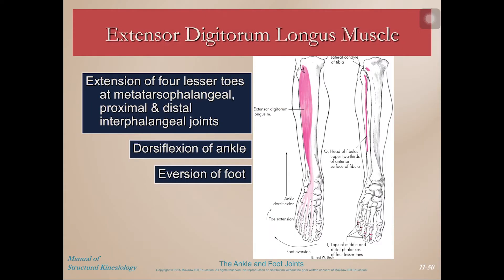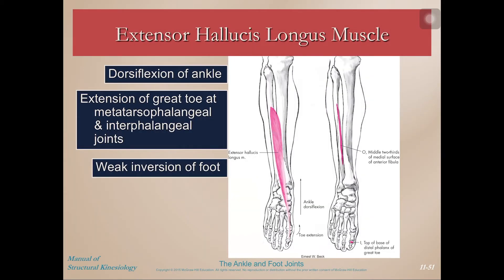Next is the extensor digitorum longus — you can tell by its name that it extends the digits. It not only does extension of the four lesser toes, but because it crosses the anterior aspect of the ankle, it also does dorsiflexion of the ankle. Additionally, because it pulls the lateral aspect of the foot into extension, you can leverage this muscle to produce eversion. So the extensor digitorum longus: extension of the toes, dorsiflexion of the ankle, and eversion of the foot.